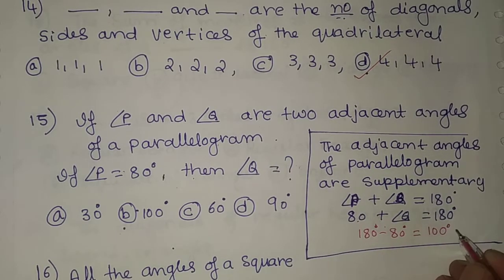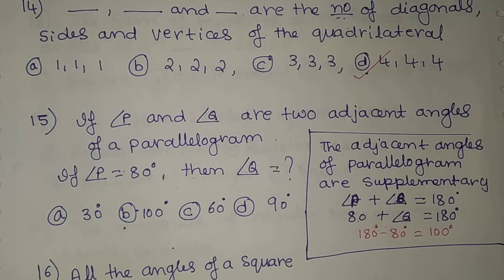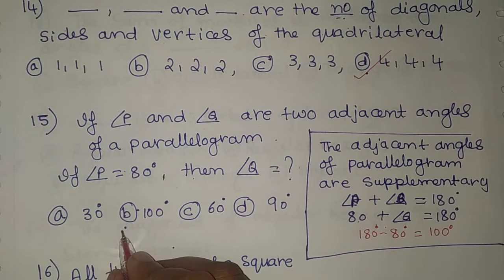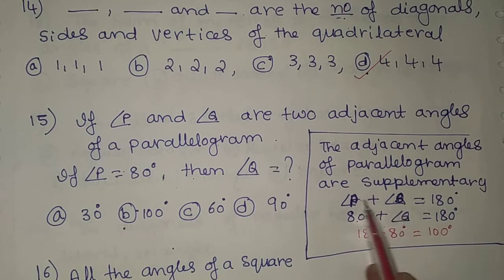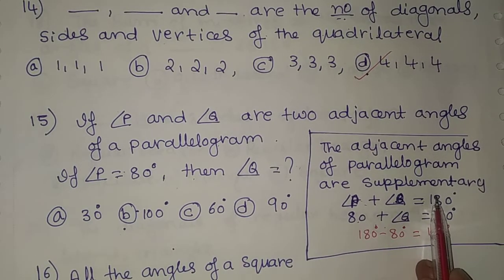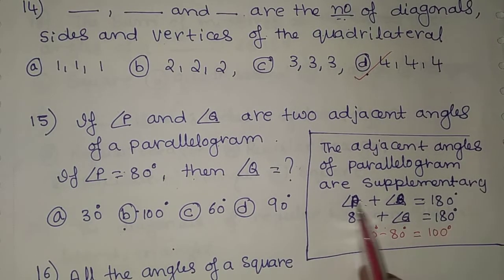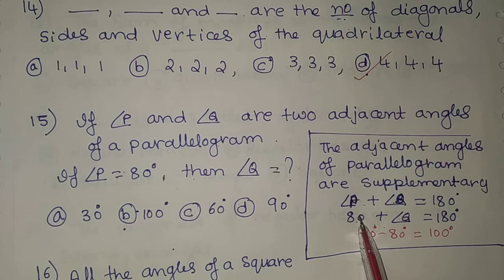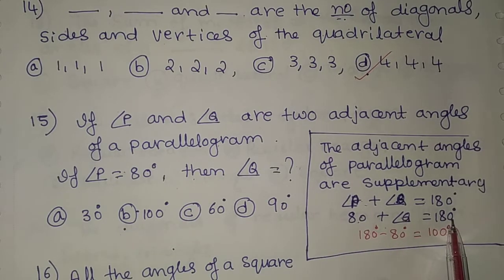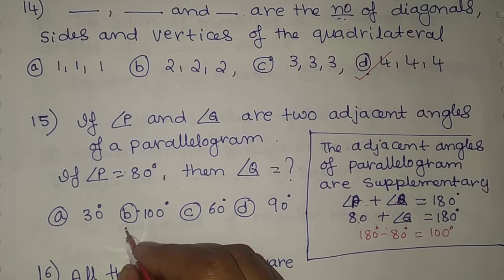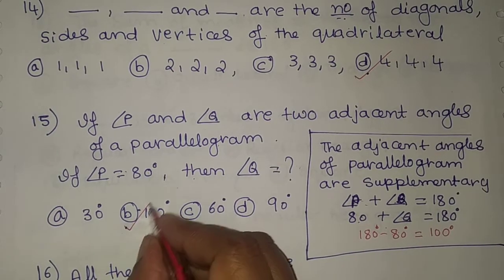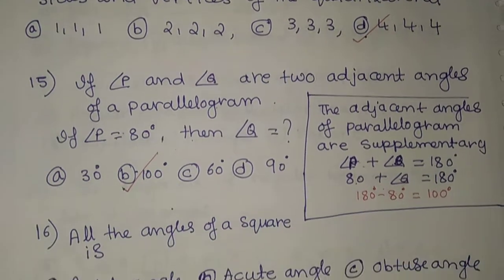So Q equals 100 degrees. Option B is the correct answer. Adjacent angles sum to 180 degrees; substituting P as 80 degrees gives Q equal to 100 degrees.